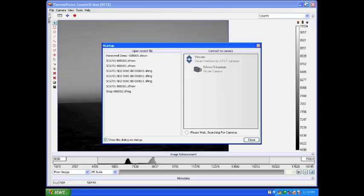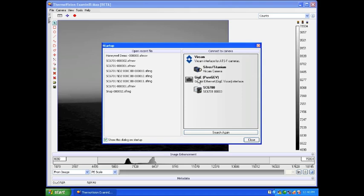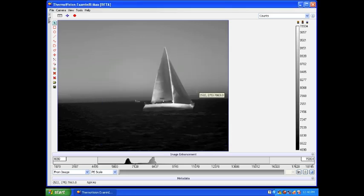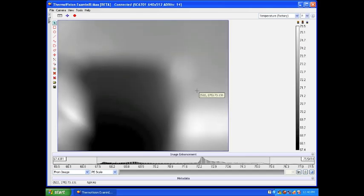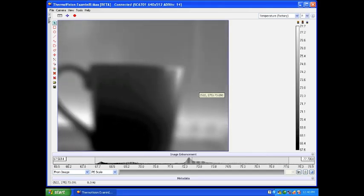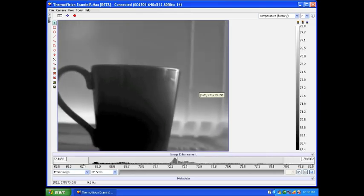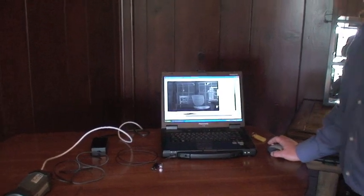So here we see examiner launch. The first thing that it does is go out and scan for any attached devices. In this case, we see a virtual camera that's in here for some of the products that we sell from our ATSF division. And we'll see our first image appear. So at this point, we have a great image.